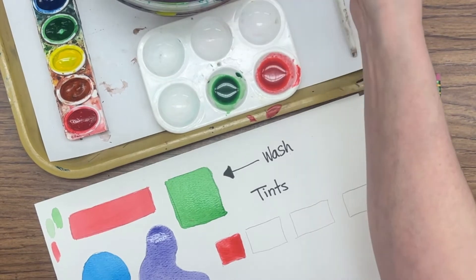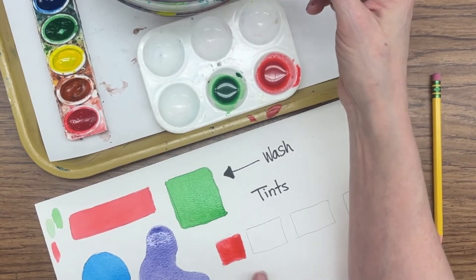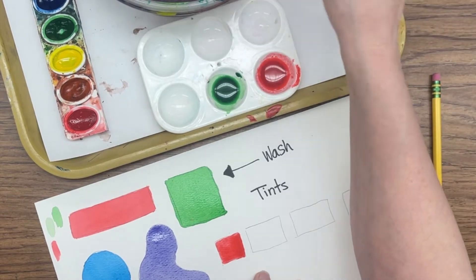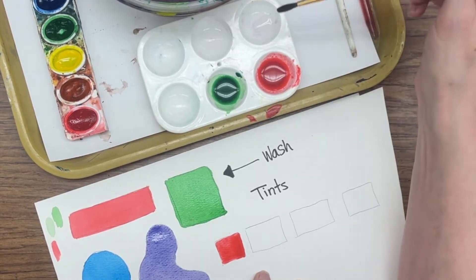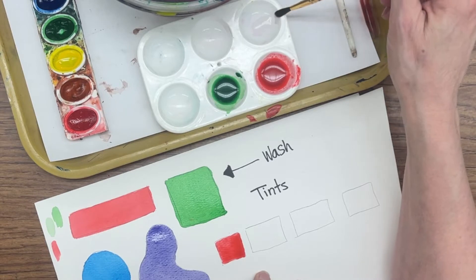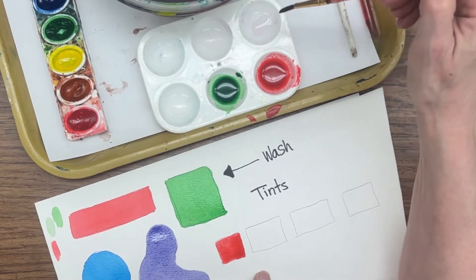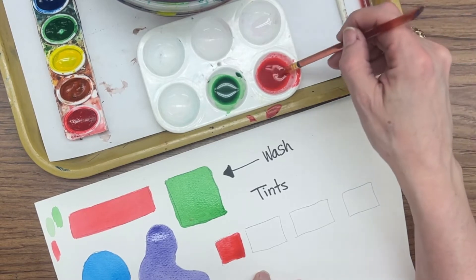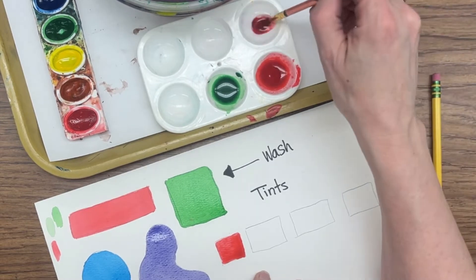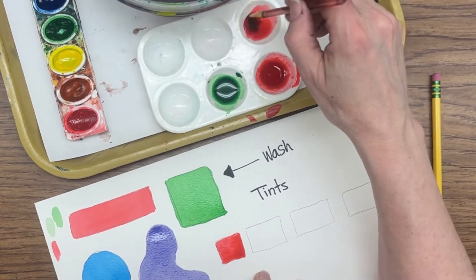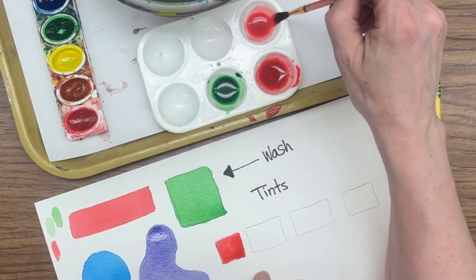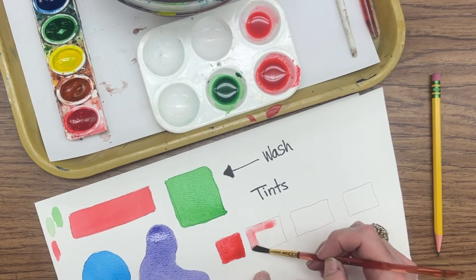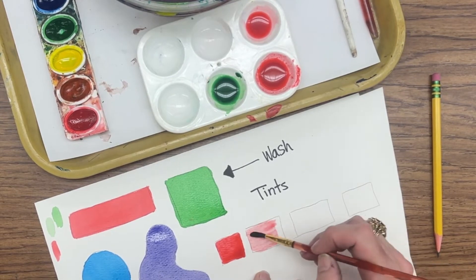So now I'm going to take, to make a tint of that color, I am going to put two drops of water in my first container. And I'm going to take a brushful of paint and add it to that container, just one brushful. And then I'm going to paint this box. See how much lighter that is?